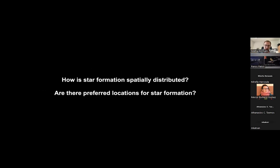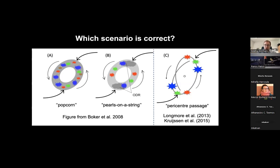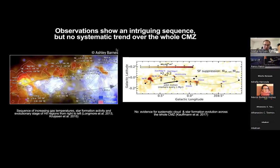An interesting question is how star formation is spatially distributed and whether there are preferred locations. Three scenarios have been proposed: the popcorn scenario — star formation happens randomly and uniformly along the ring; the pearls-on-a-string scenario — star formation is triggered preferentially at the apocenter, with an age sequence where youngest stars are closest to the apocenter and get older downstream; and the pericenter passage scenario — essentially pearls-on-a-string rotated 90 degrees, where star formation is triggered at pericenter due to tidal compression.